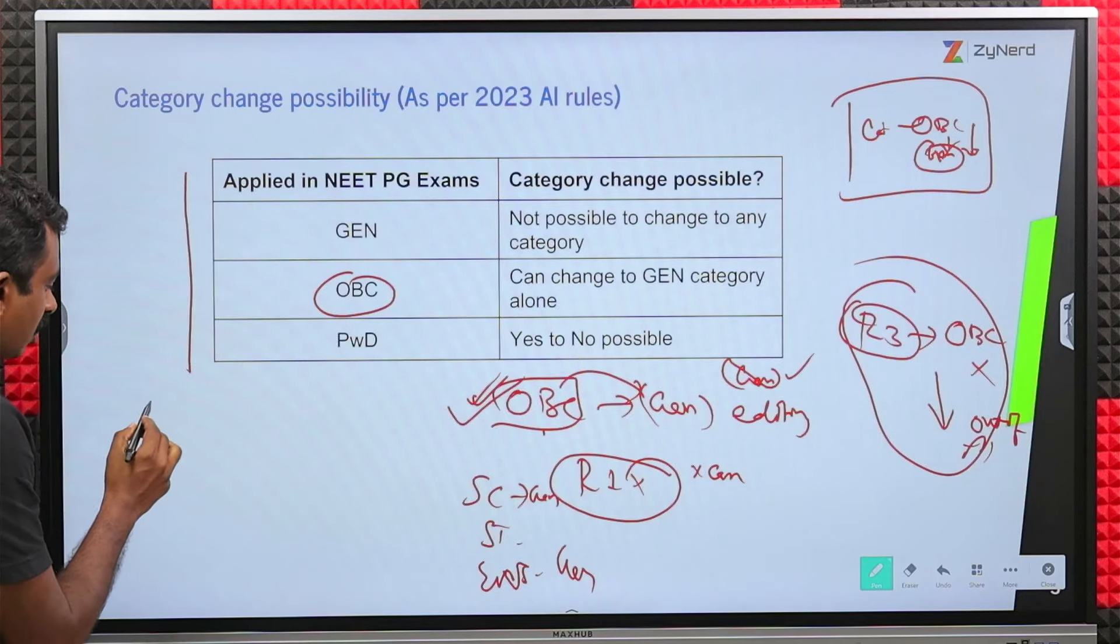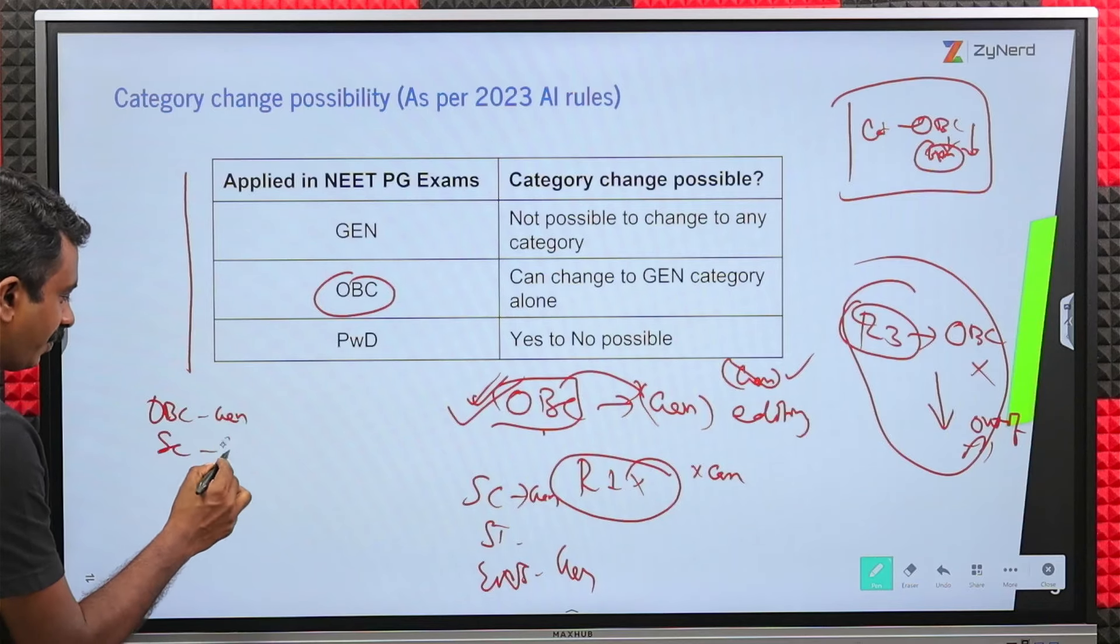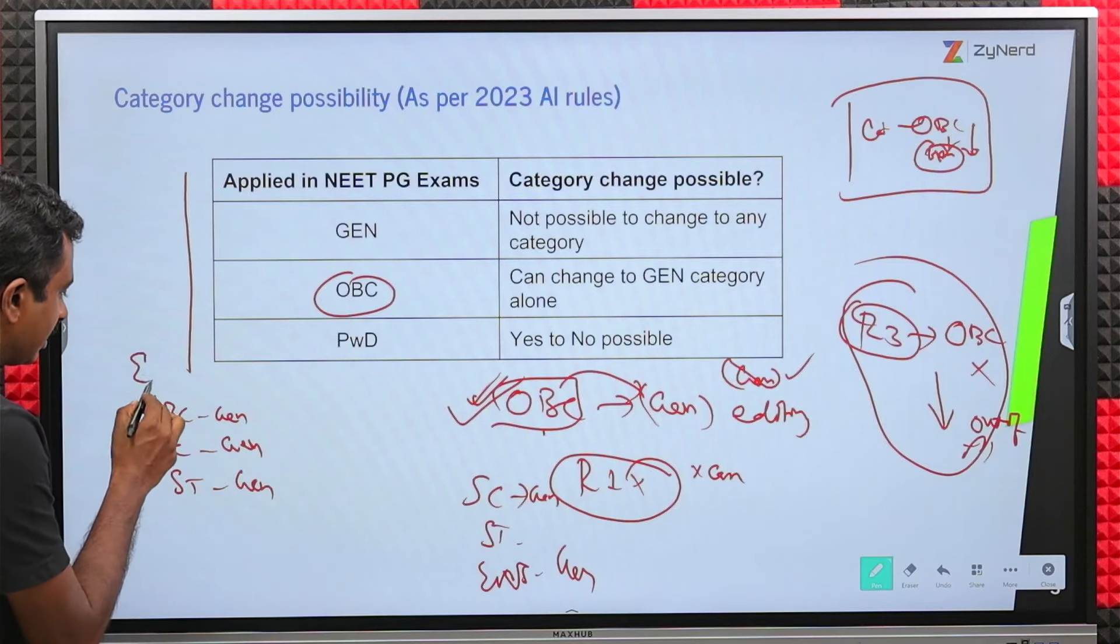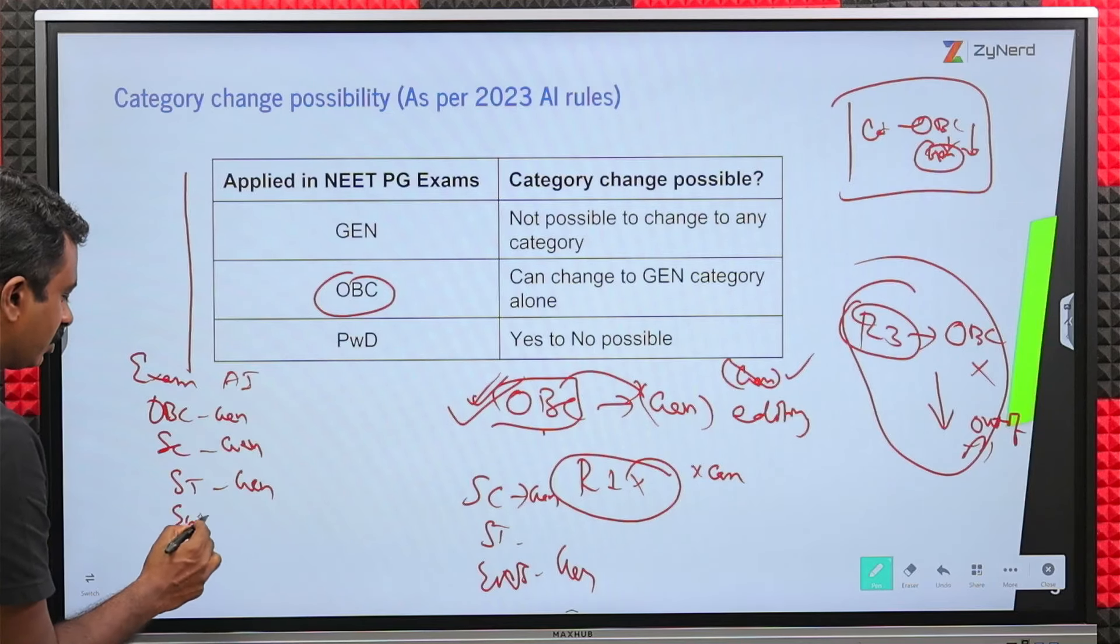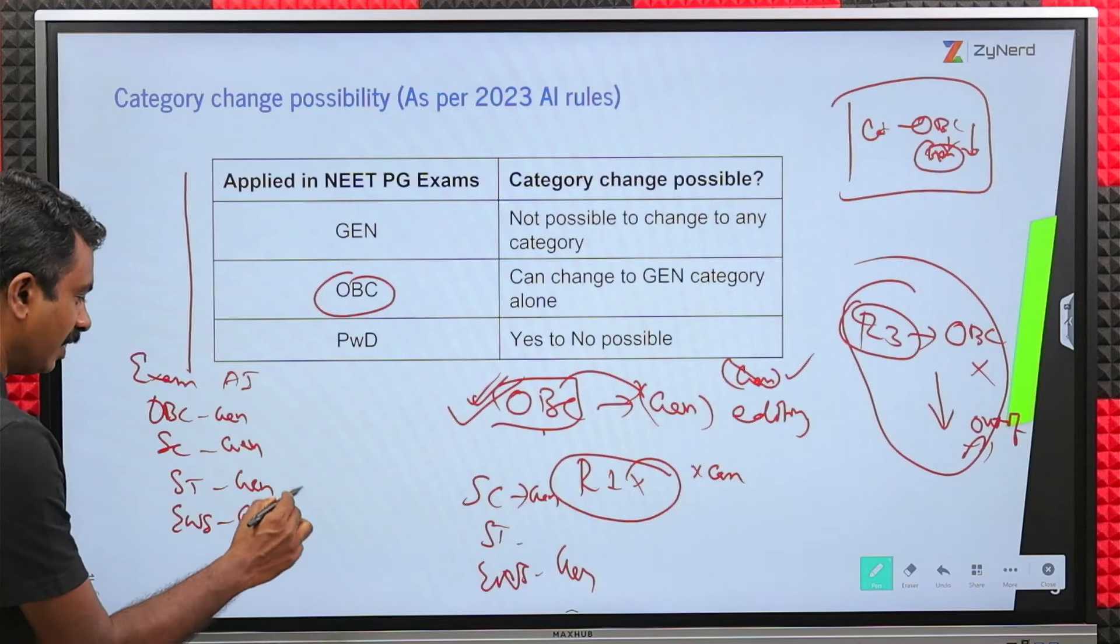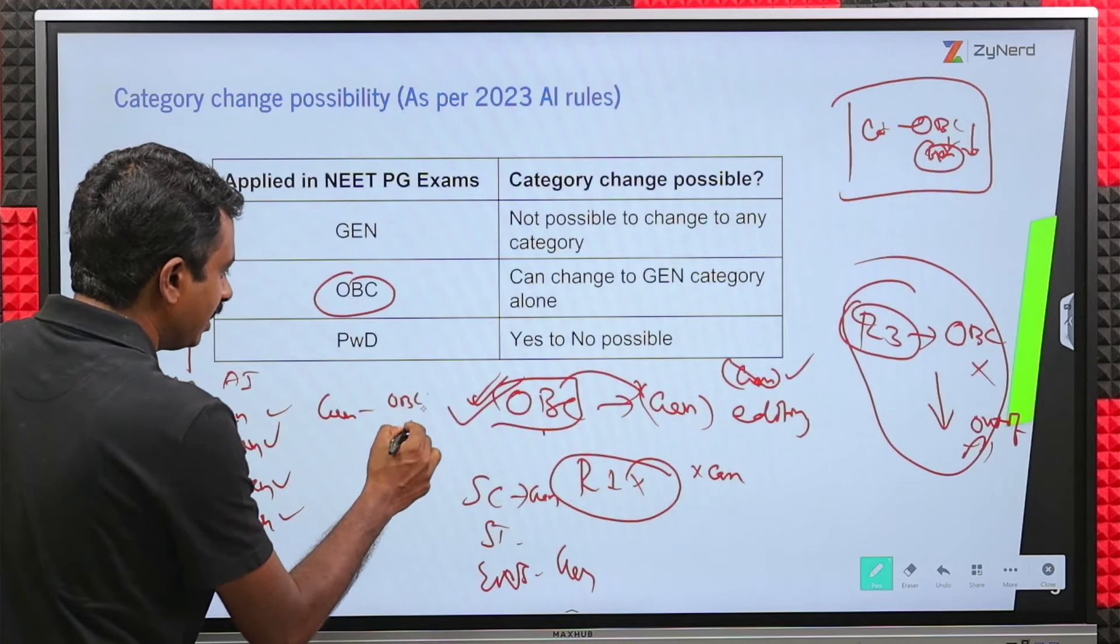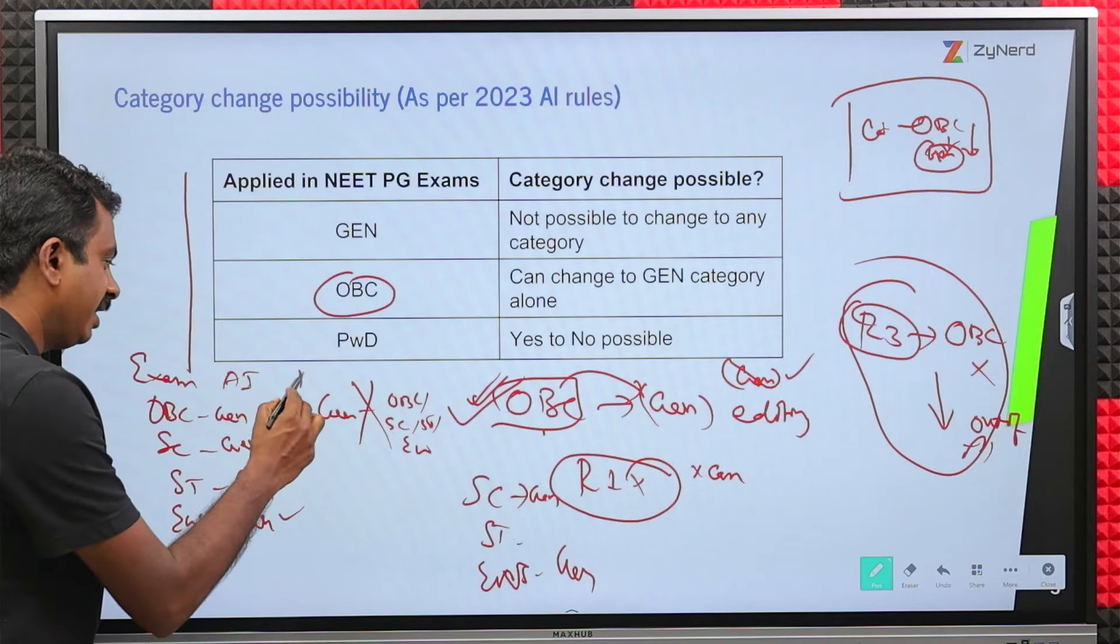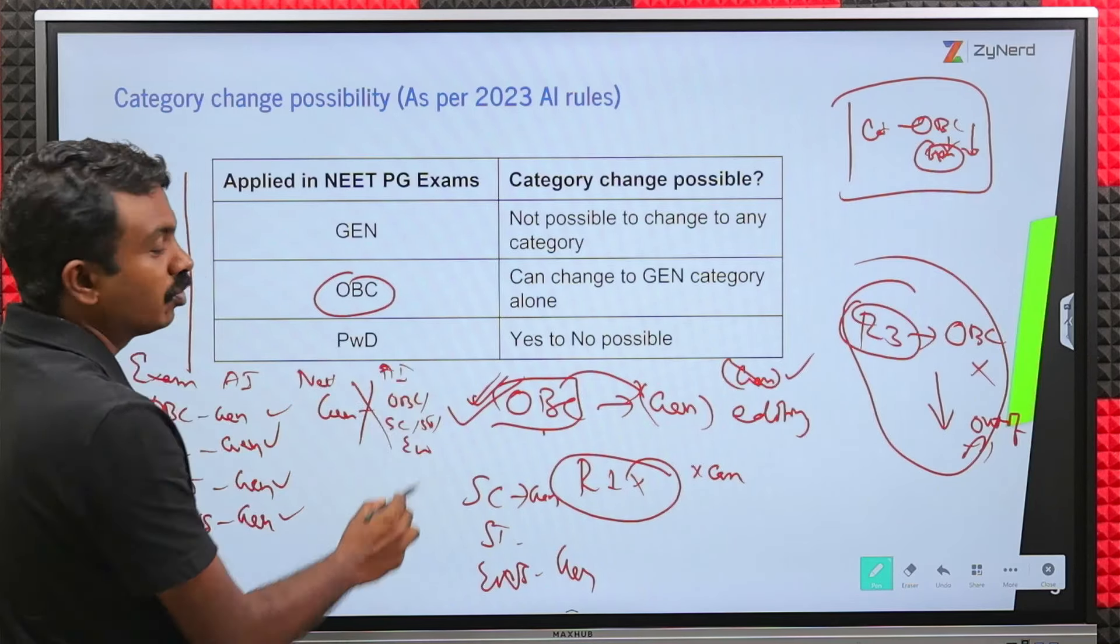All that we are saying is, what is possible? OBC to Gen, SC to Gen, ST to Gen, this is the exam one, this is the All India Counselling one. EWS to Gen is possible. Gen to anything, OBC, SC, ST, EWS is not possible. Where Gen in NEET PG exam to All India Counselling OBC, SC, ST NCL, that is not possible. You cannot claim a reservation.